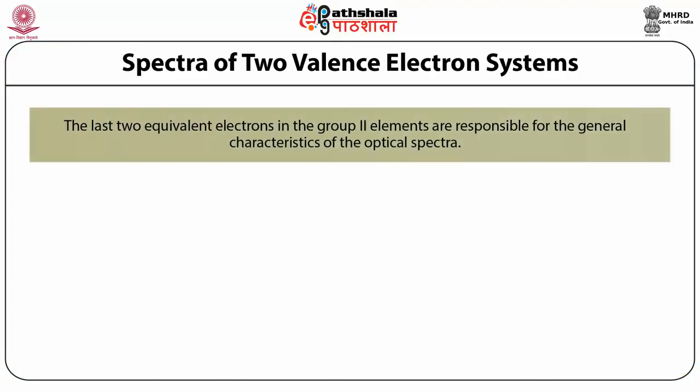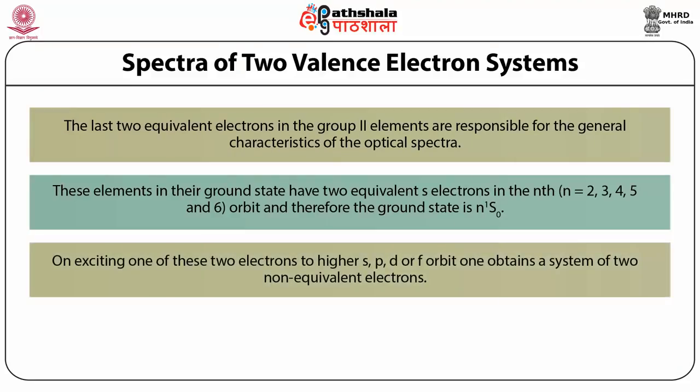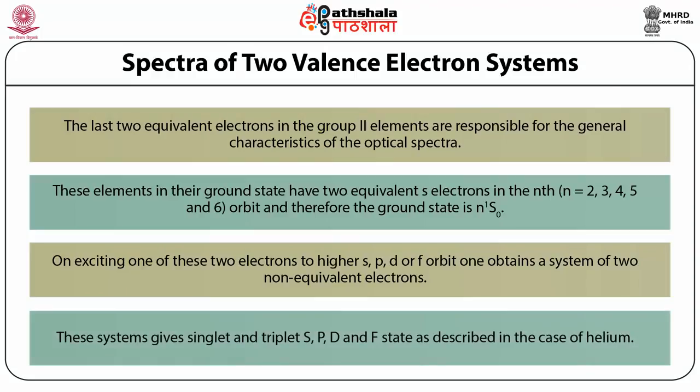Spectra of two valence electron systems: the electronic configuration of neutral atoms of Group 2 elements — beryllium, magnesium, calcium, zinc, strontium, cadmium, and mercury — have last two equivalent electrons responsible for the general characteristics of the optical spectrum. In their ground states, these elements have two equivalent s electrons in the nth orbit (n = 2, 3, 4, 5, 6), giving ground state n¹S0. On exciting one electron to higher s, p, d, or f orbits, one obtains singlet and triplet states as described for helium.